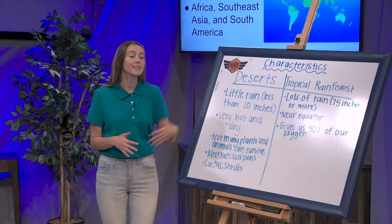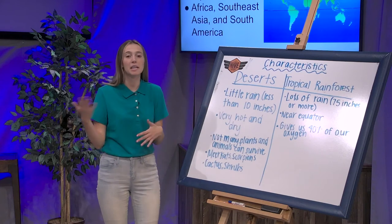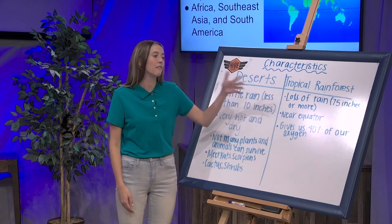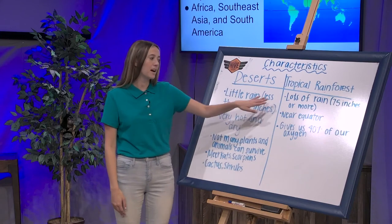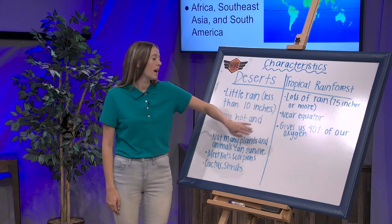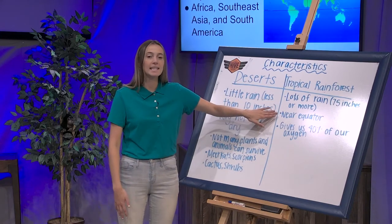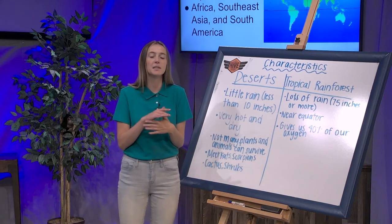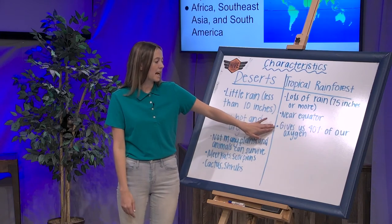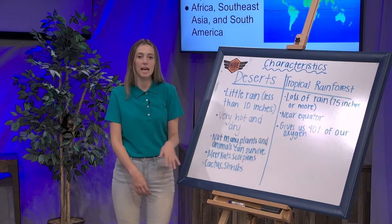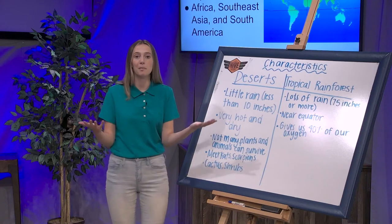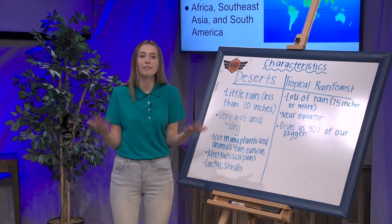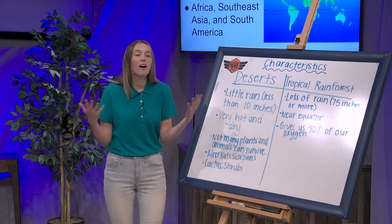We're back. Here are some of the notes I've written. First, I wrote that tropical rainforests have lots of rain — 75 inches or more. I also wrote that they're located near the equator, that imaginary line in the middle of the Earth. And last, I wrote that rainforests give us 40% of our oxygen. We need oxygen to breathe, so the rainforest is really, really important for us.